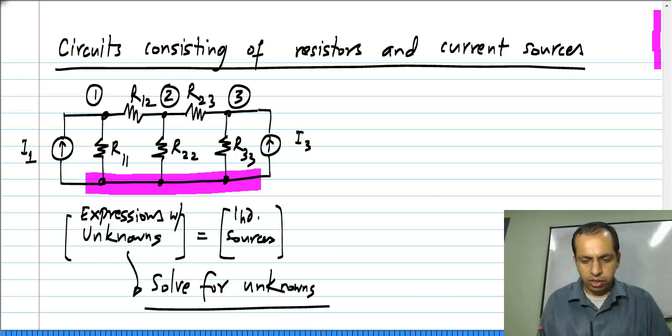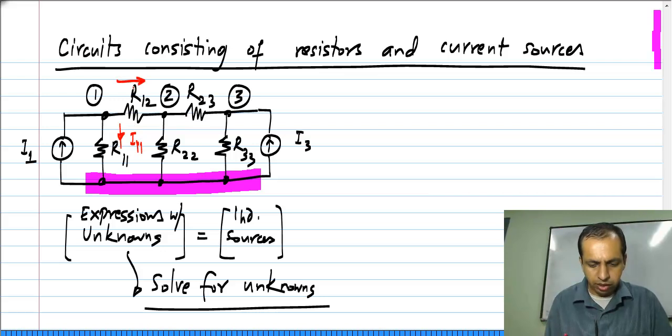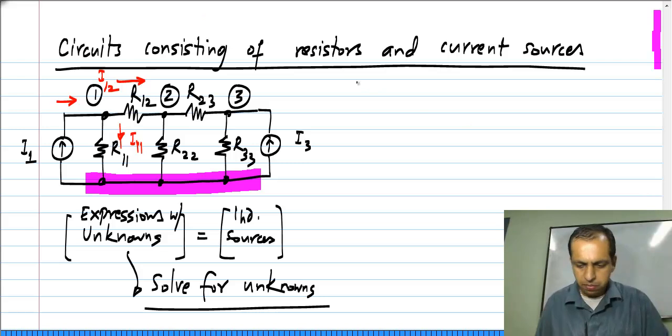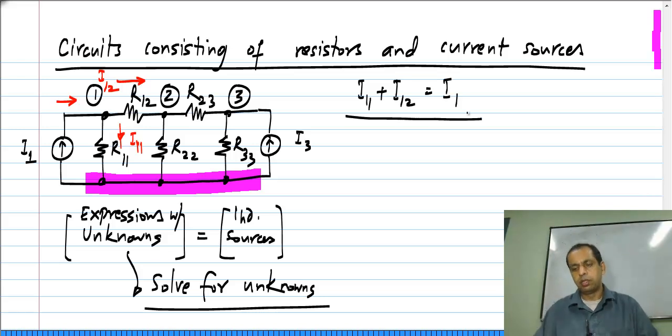Essentially what I have to write is for instance, I have to write that the current here, let me call it I11 for now and current over there I12, that has to be equal to the current coming in from the independent source. So essentially I have to write I11 plus I12 equals I1.